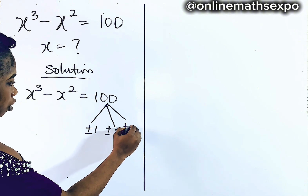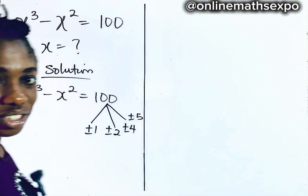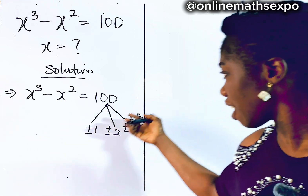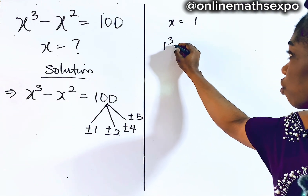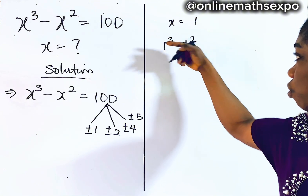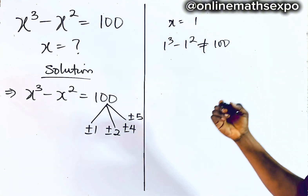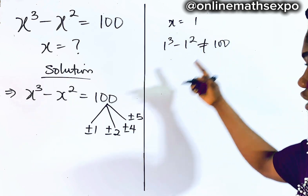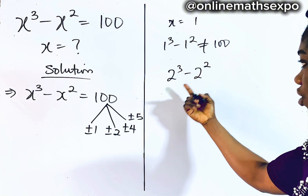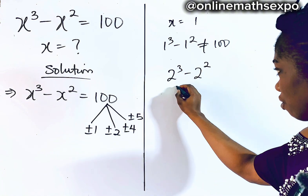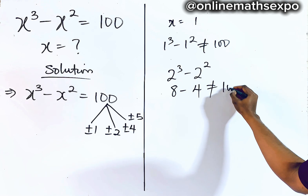We can look at plus or minus 4, plus or minus 5. Let's try x equal to 1. If you have 1 cubed minus 1 squared, that's 1 minus 1, which is not equal to 100 — not a solution. Let's try 2: 2 cubed minus 2 squared is 8 minus 4, also not equal to 100.